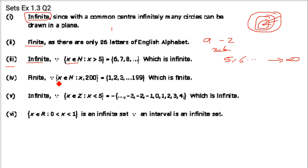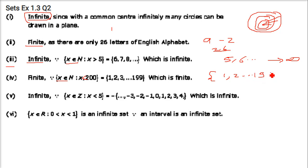Next: x ∈ ℕ and x < 200. Since it is a natural number, we start from 1 and go up to 199. So this is a finite set.